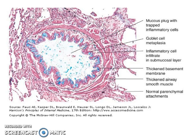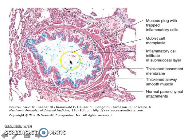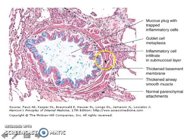This is a histological example of asthma. You can see the mucus plug with trapped inflammatory cells, and if expectorated, Curschmann spirals are visible on cytology. There is goblet cell metaplasia, inflammatory cell infiltrate, thickened basement membrane, and thickened airway smooth muscle.